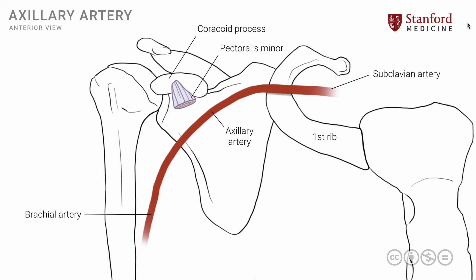The axillary artery continues through the axilla and later changes its name to the brachial artery. This name change occurs at a very specific location. To understand that, we put in place the teres major muscle, which has an attachment from the scapula to the anterior part of the humerus. At the inferior border of the teres major muscle, the name of the axillary artery changes to the brachial artery.